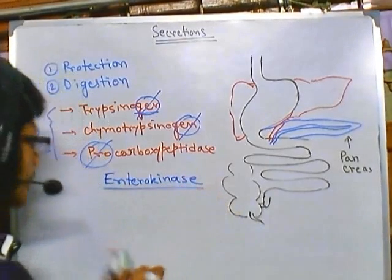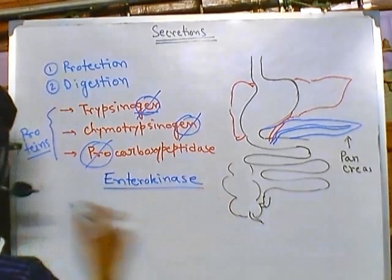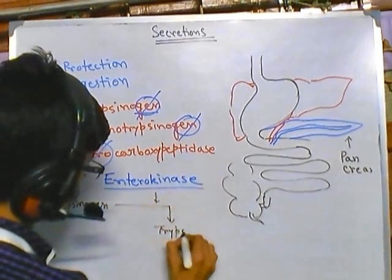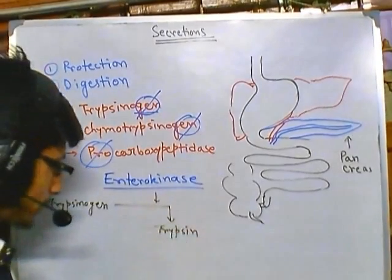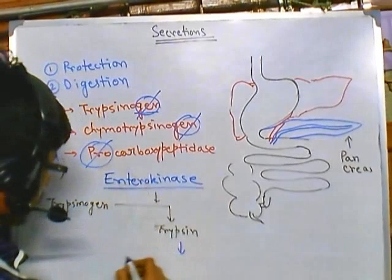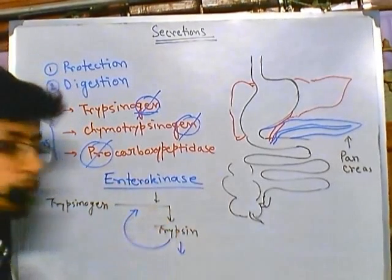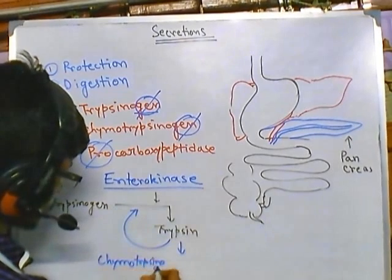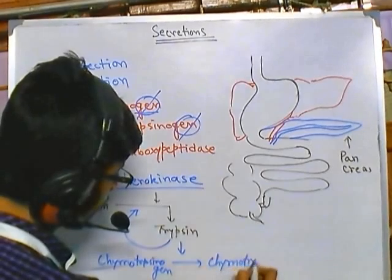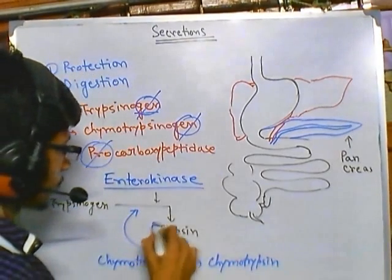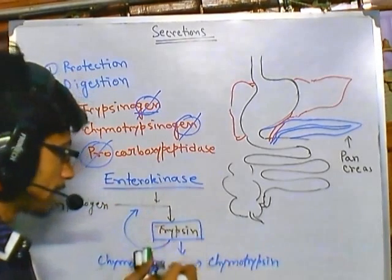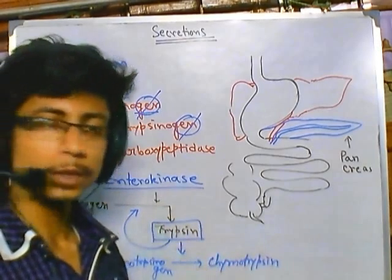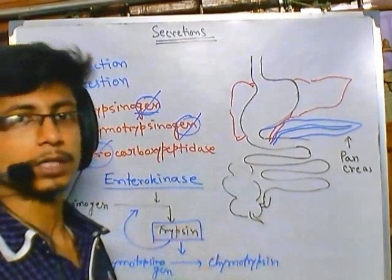Enterokinase acts on trypsinogen and breaks it down into trypsin. This trypsin can then further auto-regulate by acting on more trypsinogen to produce more trypsin. Trypsin also acts on chymotrypsinogen to convert it into chymotrypsin. So first, trypsin is produced via enterokinase, then trypsin auto-activates and produces more trypsin and chymotrypsin from their precursor forms, generating all the enzymes needed for protein degradation.